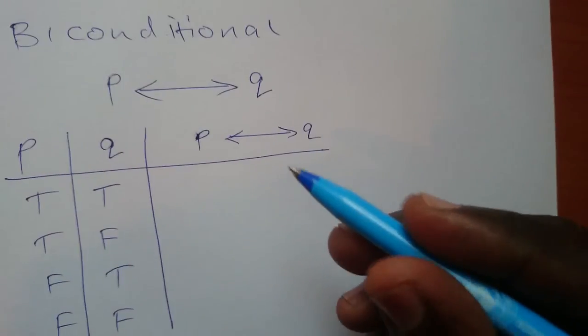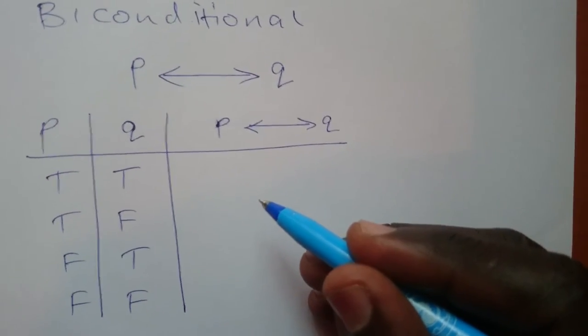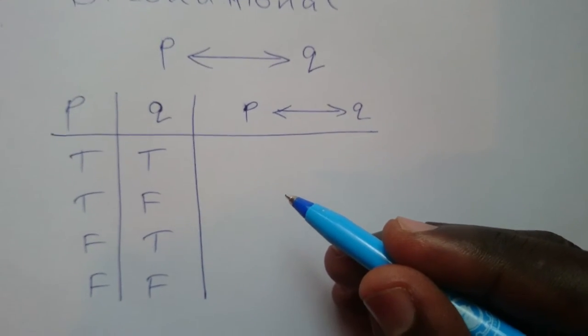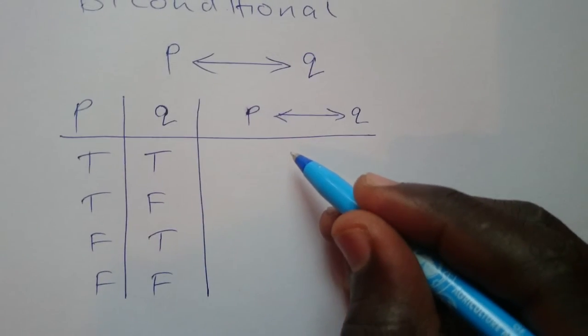It is only true when both of them have the same truth value. So in the first case it's true because they have the same truth value.